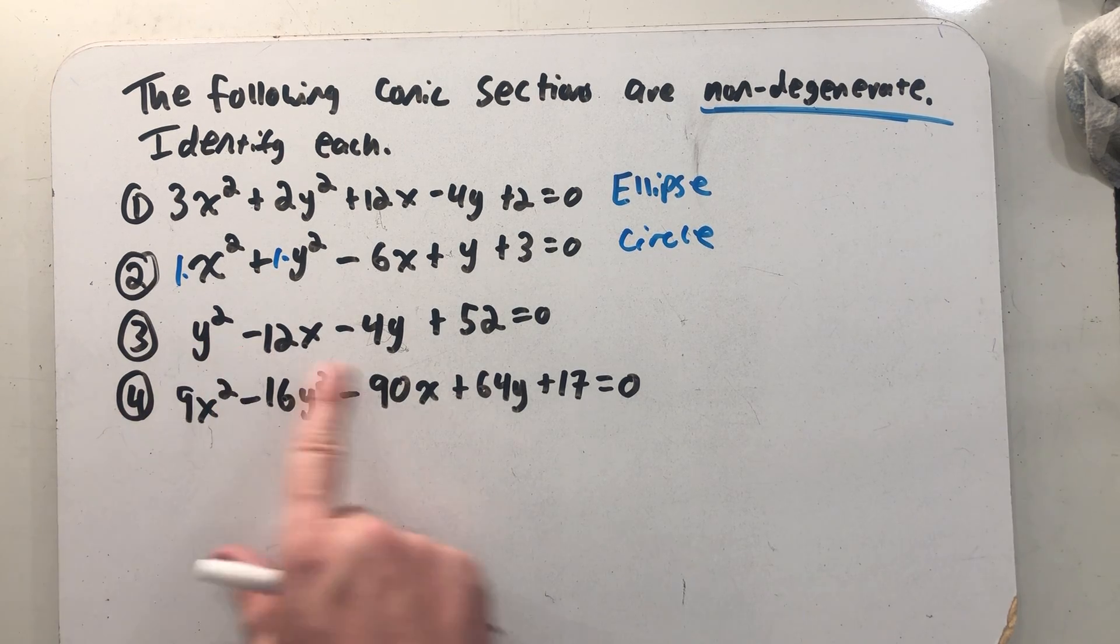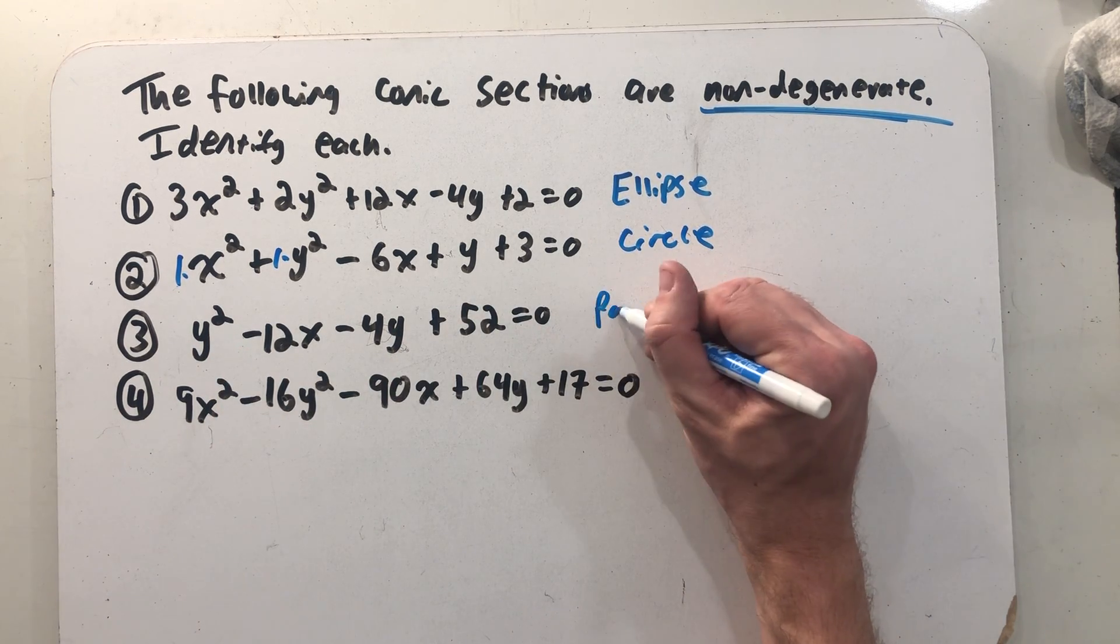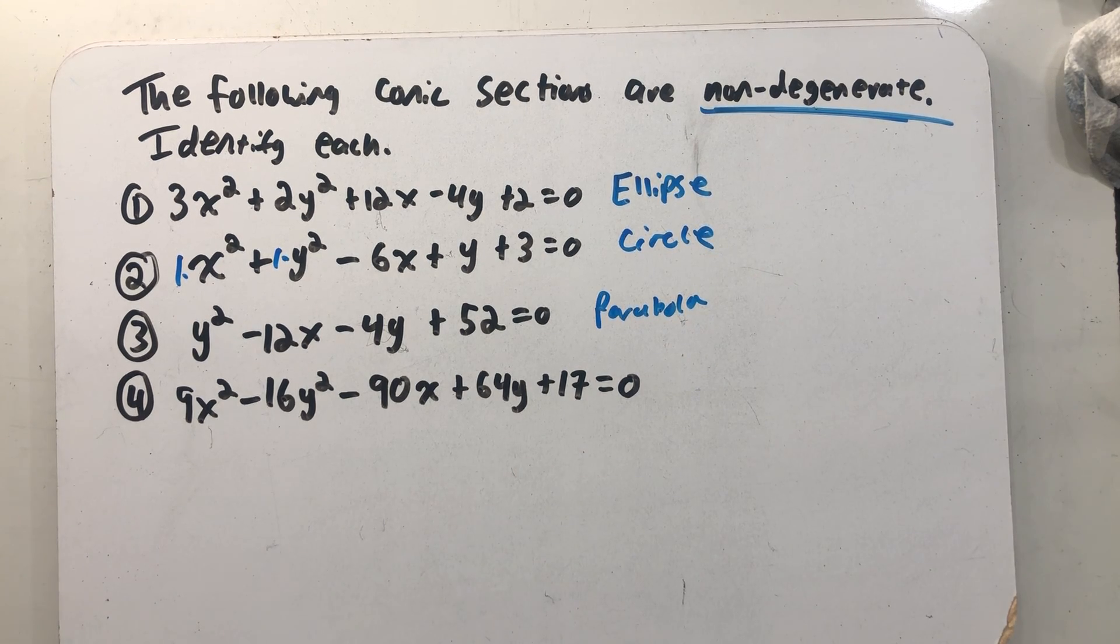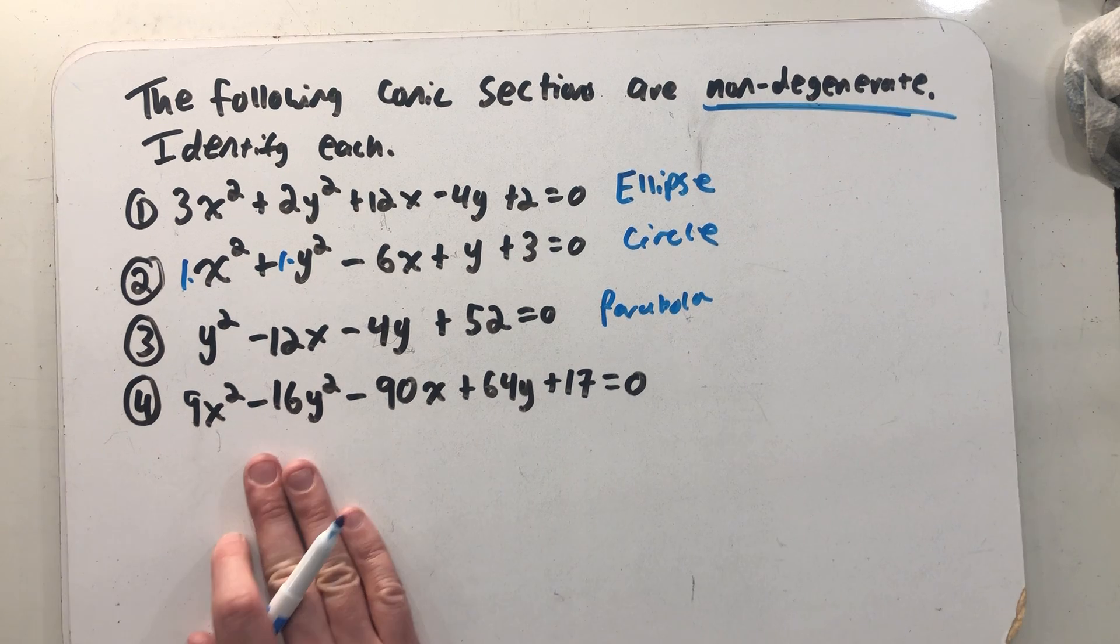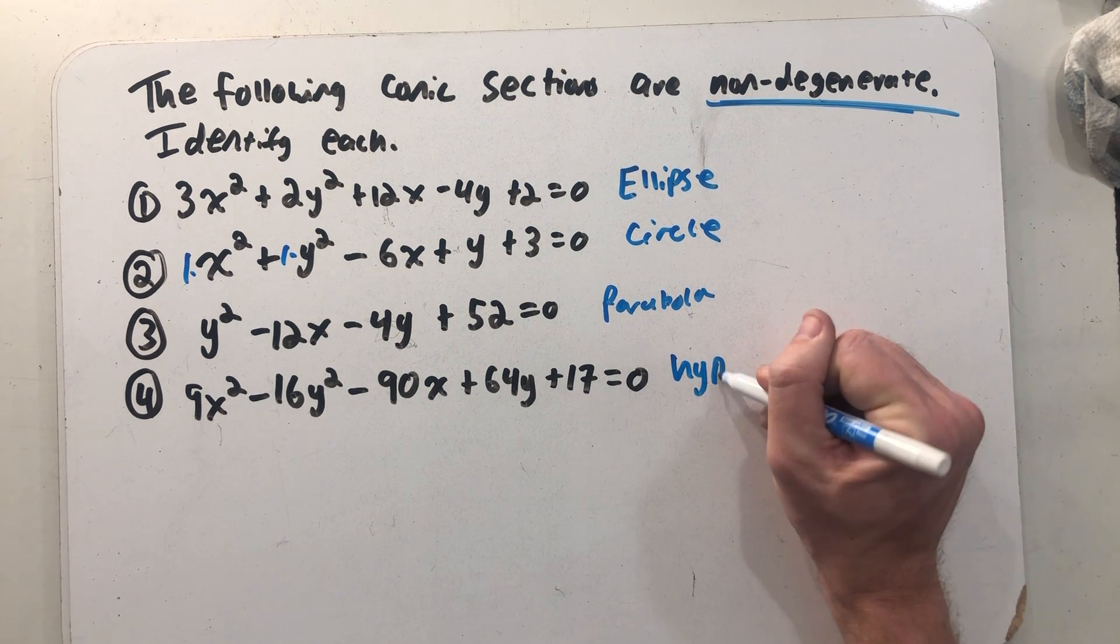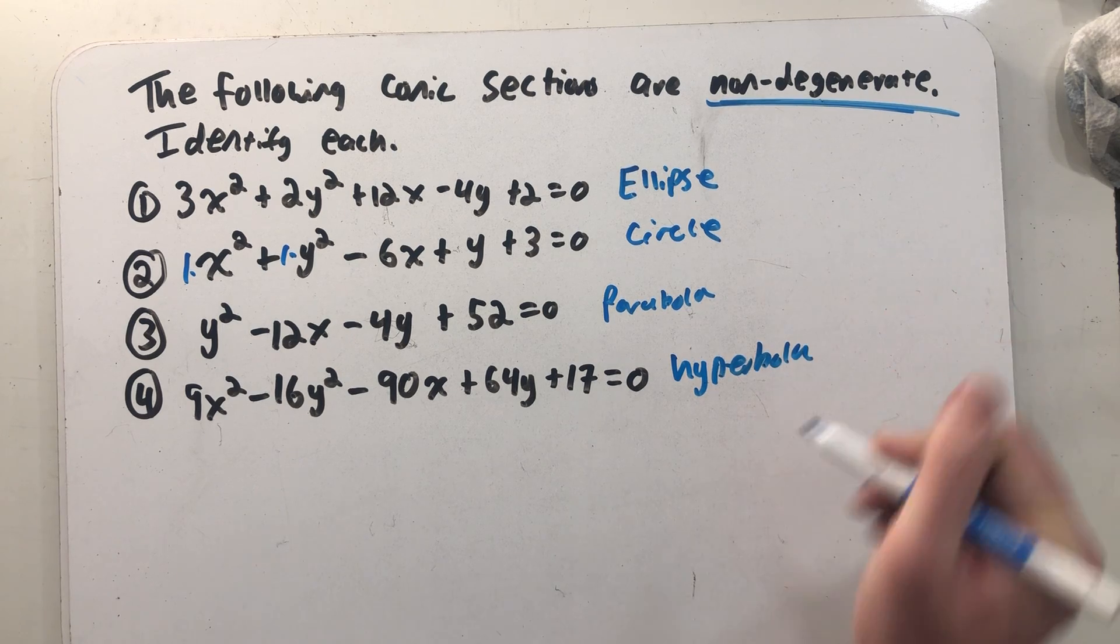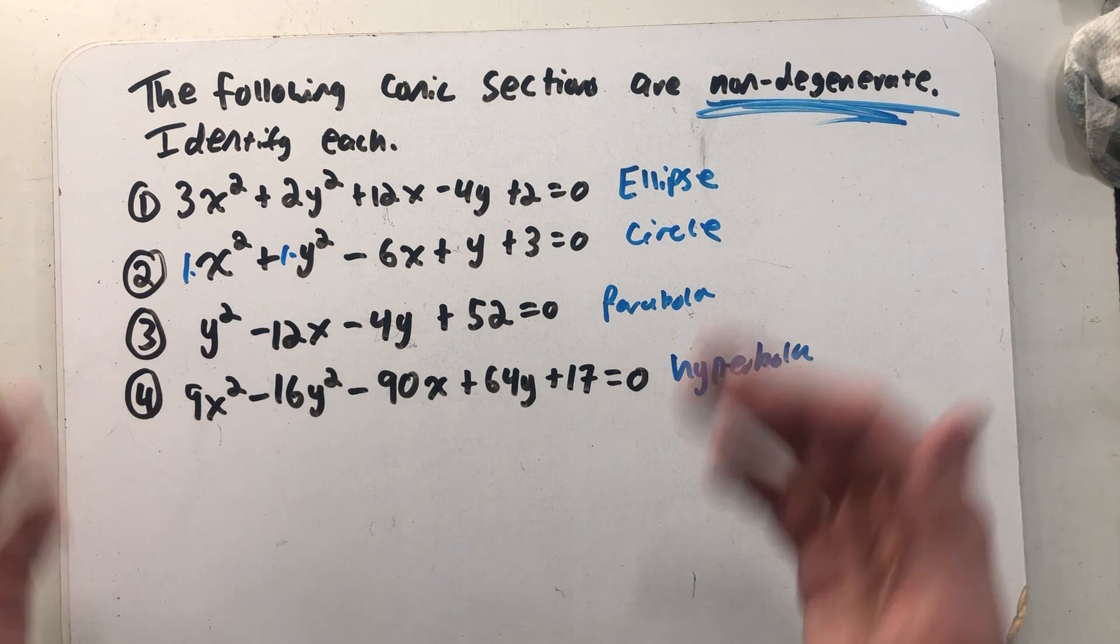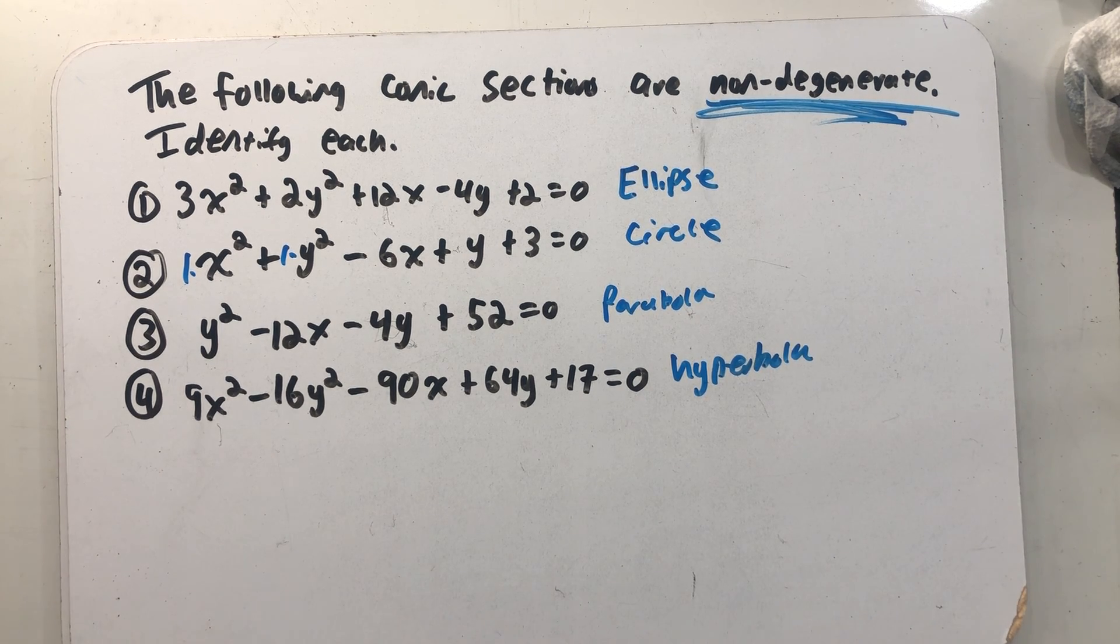Down here in number three, I see a y squared with no x squared. That has to be the equation of a parabola. And then finally, I see a positive 9x squared and a minus 16y squared, leaving that to be a hyperbola. All right, if I wasn't guaranteed this, I'd be completing the square a whole lot to see if I could write these in their standard forms. But under that guarantee, that's a very simple process to go through.